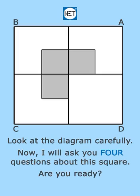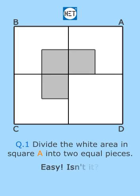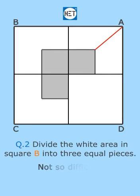Question number one: divide the white area in square A into two equal pieces. Easy, isn't it? Here is the answer. Question number two: divide the white area in square B into three equal pieces. Not so difficult.